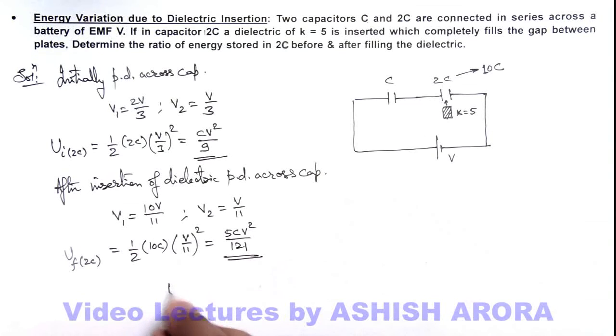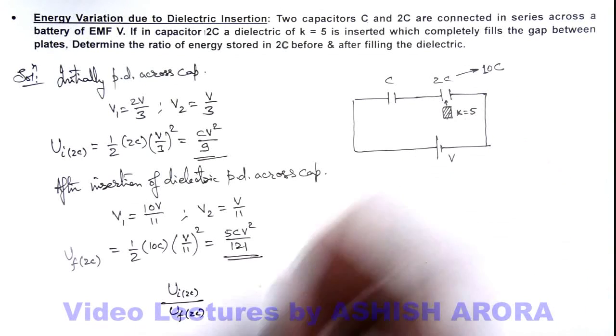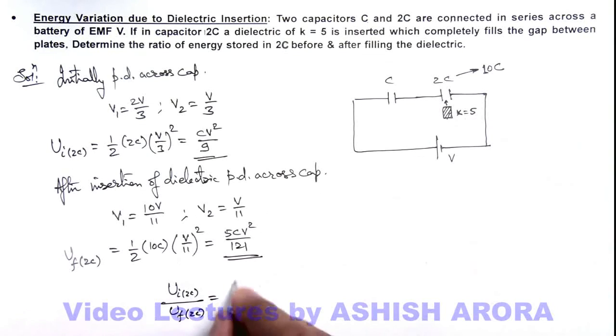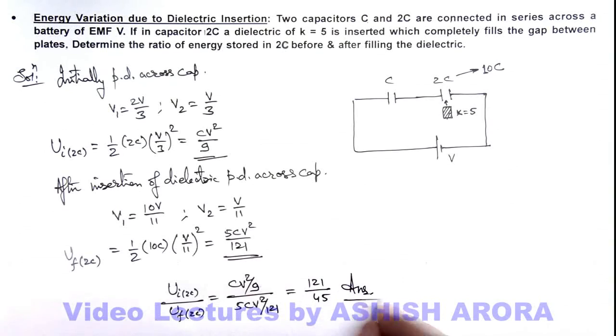And we are required to find the energy stored in 2C capacitor initial to final, so this is U initial of 2C divided by U final of 2C which is actually now changed to 10C. So this is CV square by 9 divided by 5CV square by 121. So on simplifying we are getting the result 121 by 45. That is the answer to this problem.